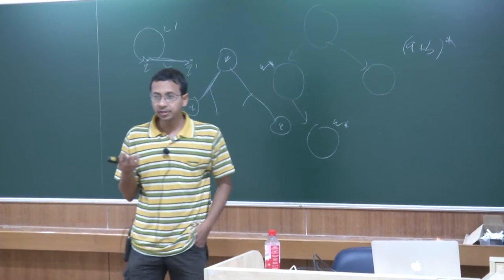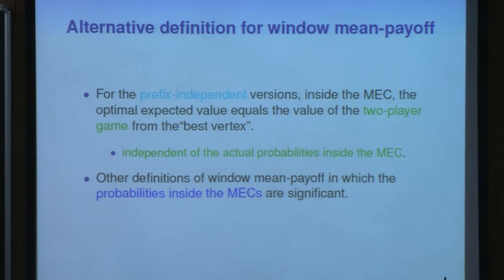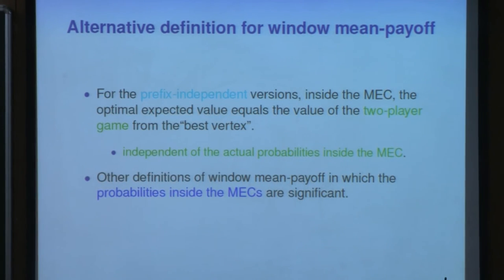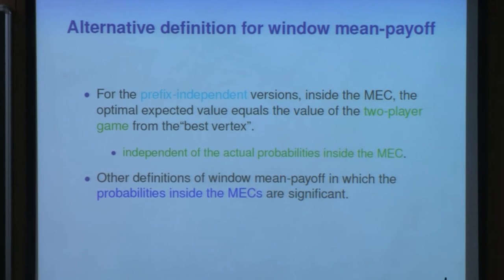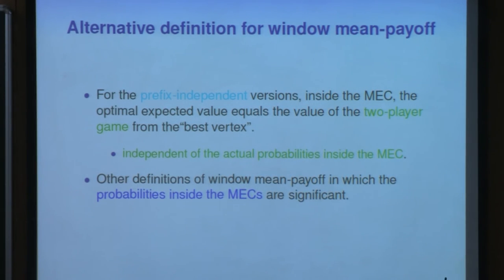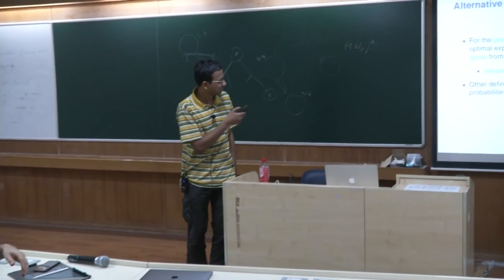One limitation is that when we enter the end components, the probabilities do not play an important role — the value is essentially determined by a two-player game, independent of the probabilities. There can be other definitions of window mean payoff in which the probabilities inside the MECs also play a significant role. We have some definitions and initial results on this direction which we are currently working on.